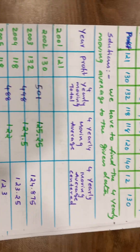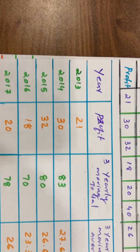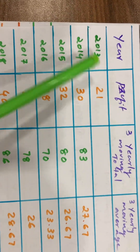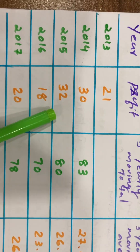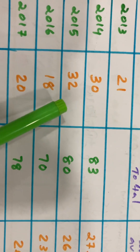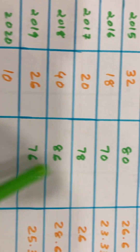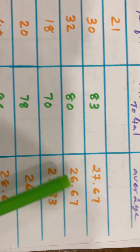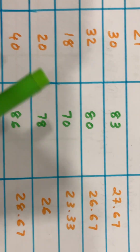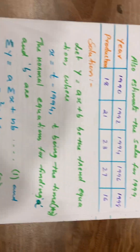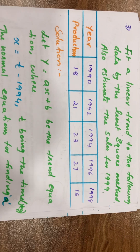Now let's calculate the moving average. For a 3-year moving average: 21 + 30 + 32 divided by 3; then 30 + 32 + 18 divided by 3; then 32 + 18 + 20 divided by 3. The results are 37.67, then 80 divided by 3 = 26.67, and 70 divided by 3 = 23.33.